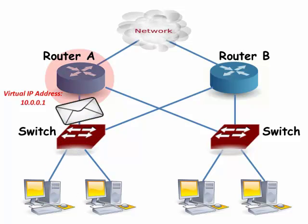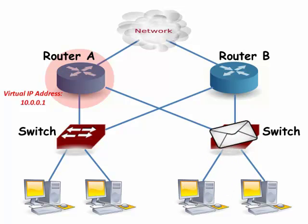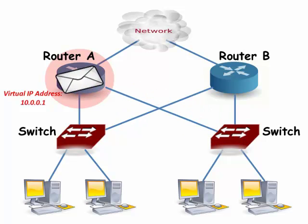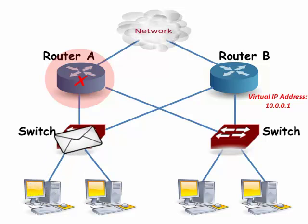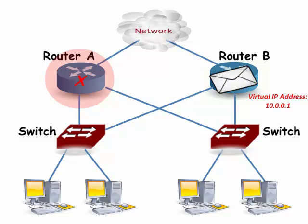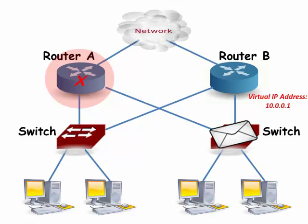But suppose the active router malfunctions and can no longer forward packets. Router A will stop sending out hello packets. The role of the virtual router then goes to the backup Router B. It now advertises the virtual IP address and the virtual MAC address. Now when the network clients need to send packets to the internet, they use Router B as the default gateway.